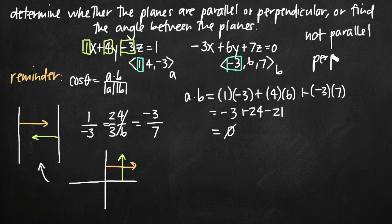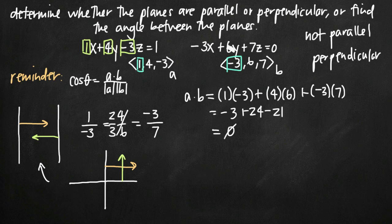Perpendicular is my final answer for this problem. However, if my result had not been 0 — if the dot product is a non-zero number — I can conclude the vectors are not perpendicular, meaning the planes are not perpendicular either. If my planes are not parallel and not perpendicular, then there's some angle between the planes. In that case, I use this formula: cos(θ) equals the dot product of a and b divided by the magnitude of a times the magnitude of b.